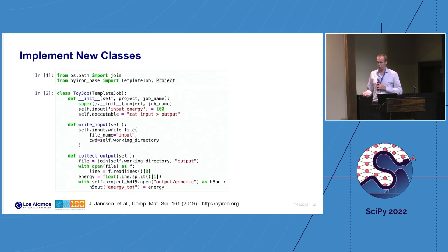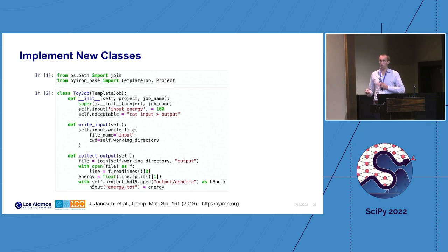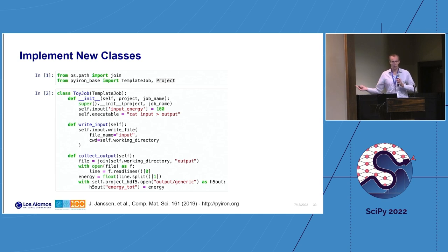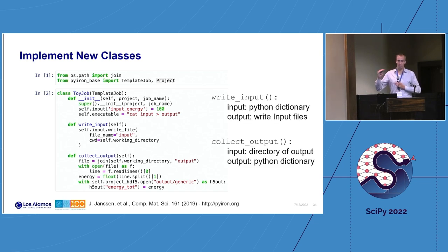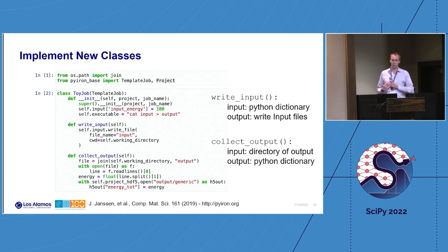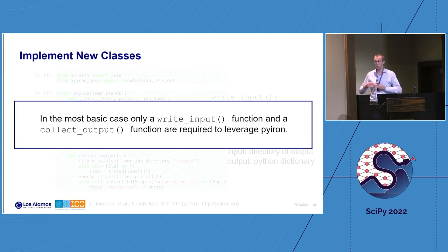That was Pyron about a year ago. Since then, we focused on extending the principles: job management can be basically independent of atomistics. We split the project into a Pyron atomistics module and a Pyron base module. The base module covers only job management and data storage, with no relation to the atomistics part. To integrate new codes, you only need to write a write-input function that takes a Python dictionary and writes output files, and a collect-output function that takes a directory and returns a Python dictionary. All the rest is handled by the framework.